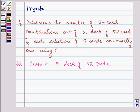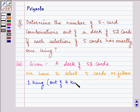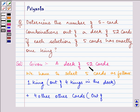First, 1 king out of 4 kings in the deck, plus 4 other cards. Out of 52 cards, 4 are kings, so we select the 4 other cards from the remaining 48 cards.